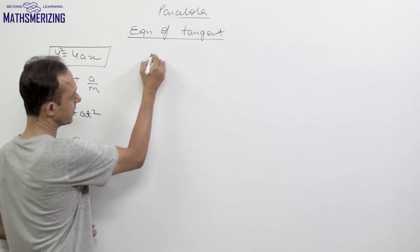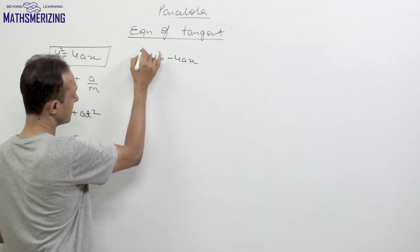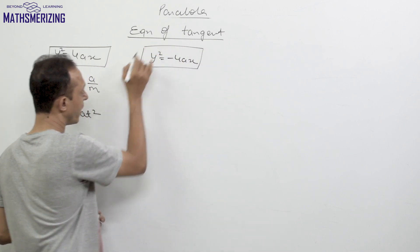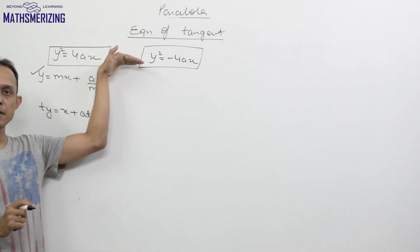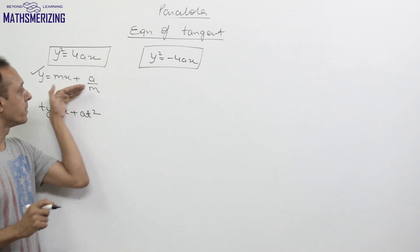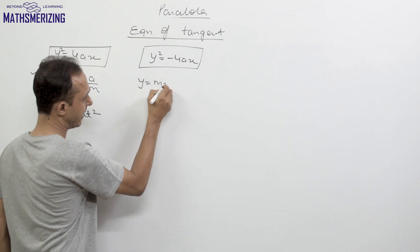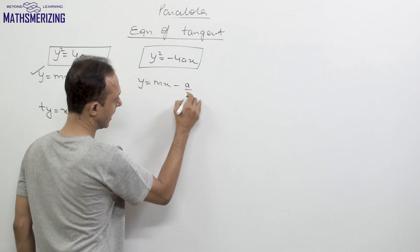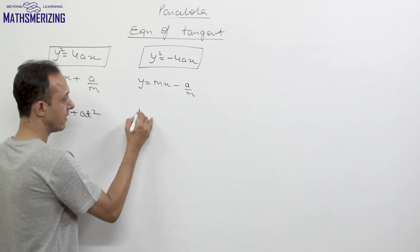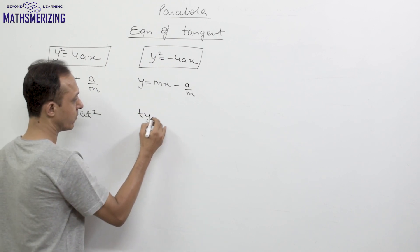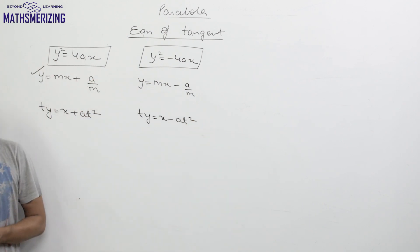For the second form y² = -4ax, all we need to do is replace a with -a. So the equation of tangent for this parabola can be written as y = mx - a/m, or in terms of parameter t: ty = x - at².